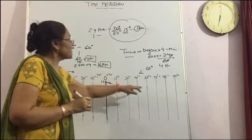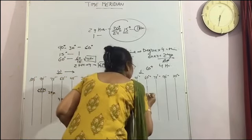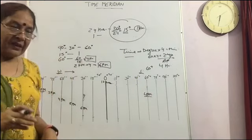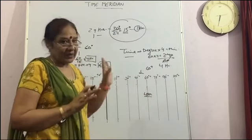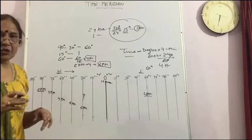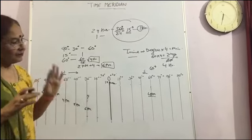So the time on the 60 degree east is 4 pm. So in this way we can calculate the time. So I think it is clear to everyone that how we are going to calculate the time.